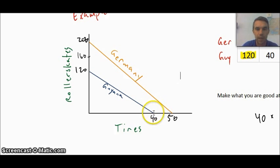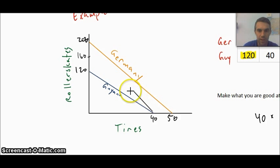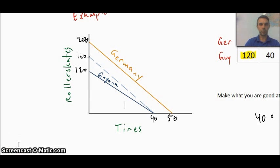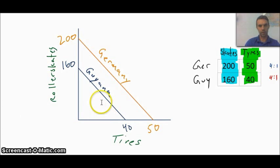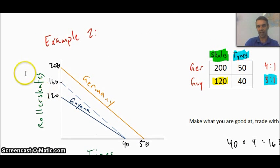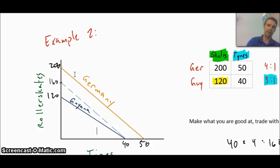Going back to the PPF for Guyana: keeping the same 40 tires, they can now effectively produce a full 160 roller skates through trade. That number should look familiar — it's what a perfectly equal ratio between Germany and Guyana would be. The whole point we started with was that if we apply comparative advantage correctly, we get back to that same point. We can see that the two lines should be parallel.